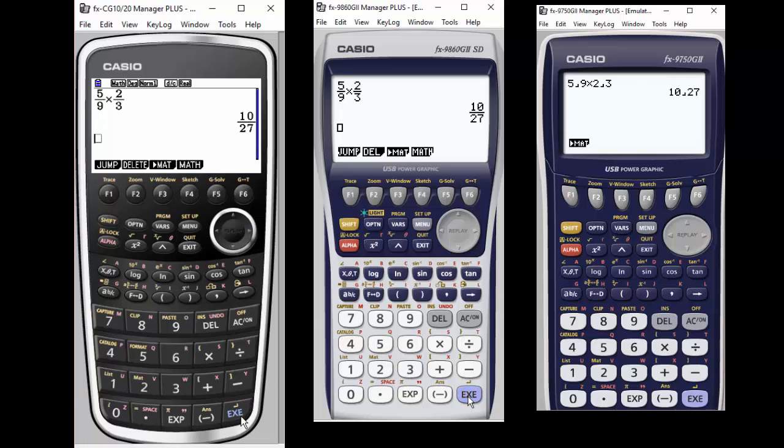Once you have the fraction in all three calculators, you can toggle between decimal and fraction form. But the first two calculators have that natural display that the third calculator does not have. So if that's important to you, then you might choose the first two options as your calculator.